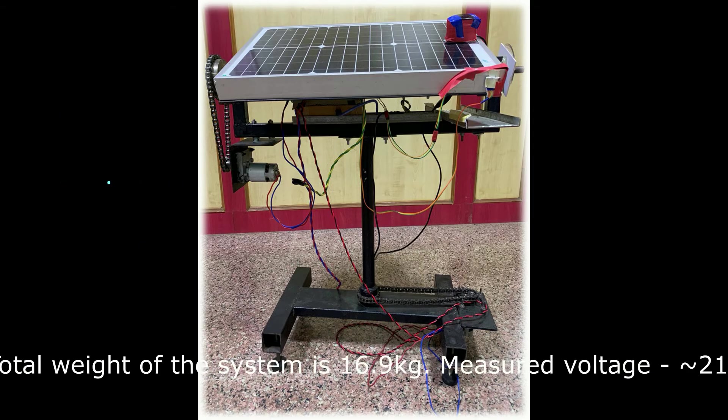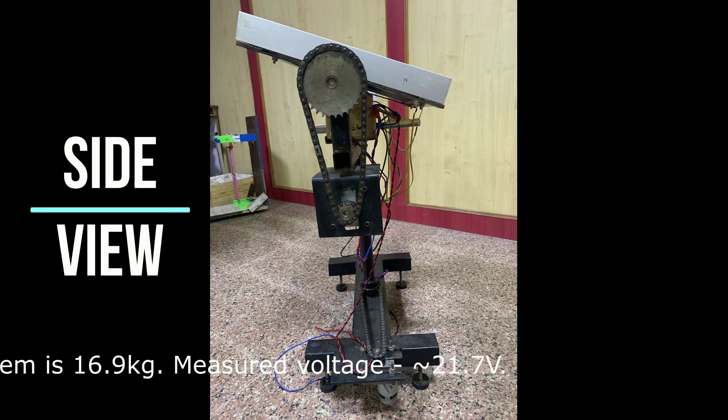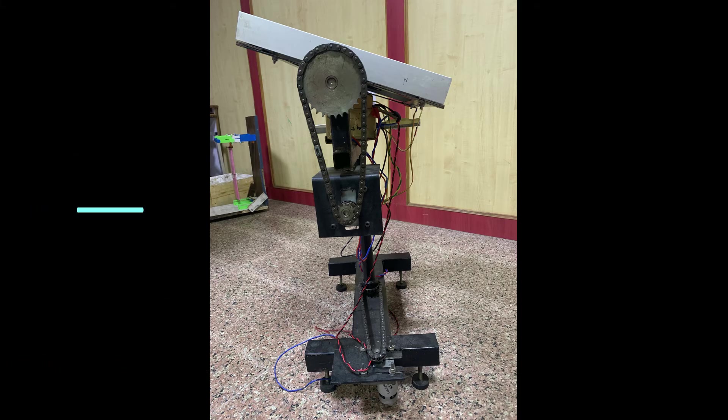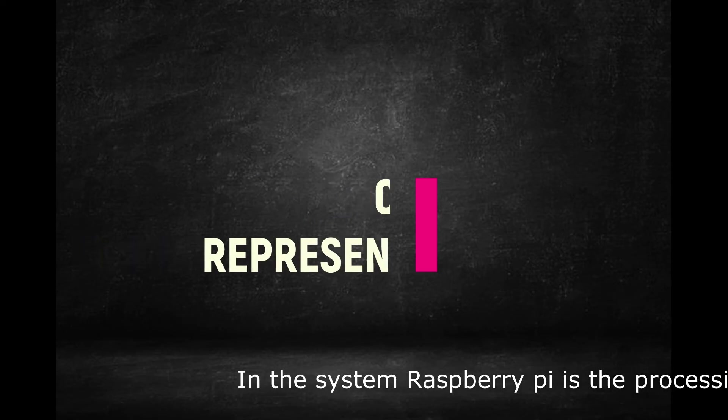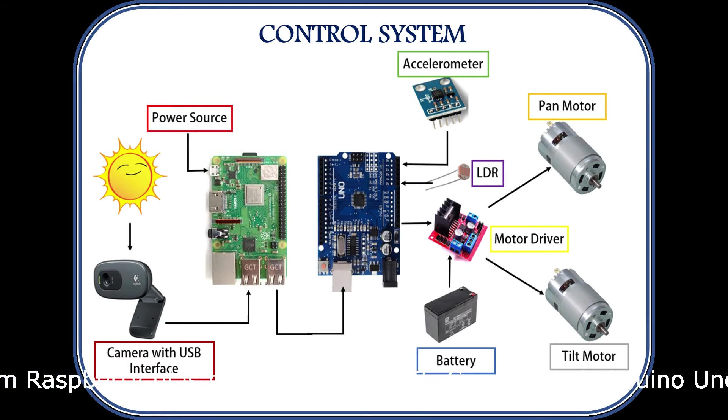In this prototype, the web camera which has placed on the solar panel is connected to Raspberry Pi which gives the live data, where the Raspberry Pi does image processing technique to the image. By using HSV, Hue Saturation Value technique, it gives coordinates of the sun in the frame, these coordinates have sent to the microcontroller, Arduino Uno.